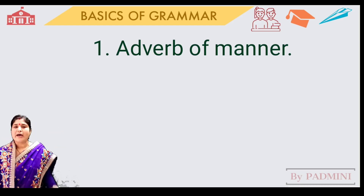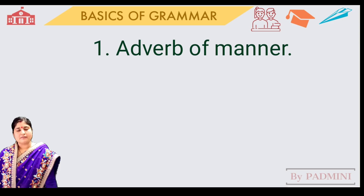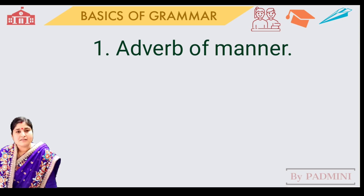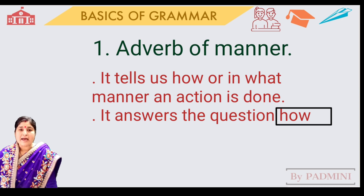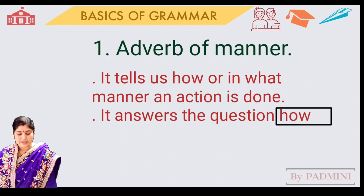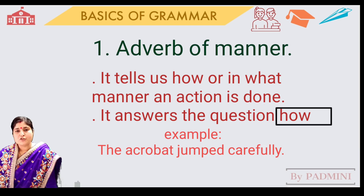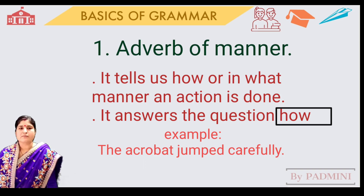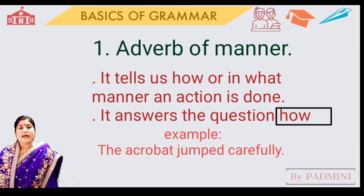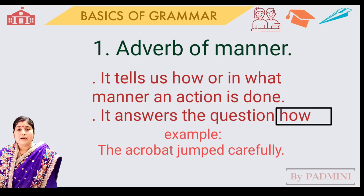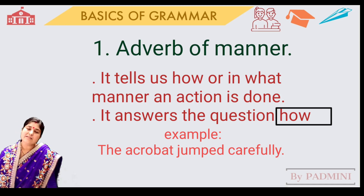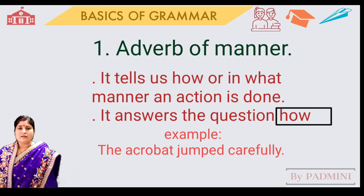Number one: adverb of manner. An adverb of manner tells us how or in what manner an action has been done. The question word is 'how.' For example, 'the acrobat jumped carefully.' How did the acrobat jump? The acrobat jumped carefully. So adverbs of manner tell us how or in what way an action has been done.